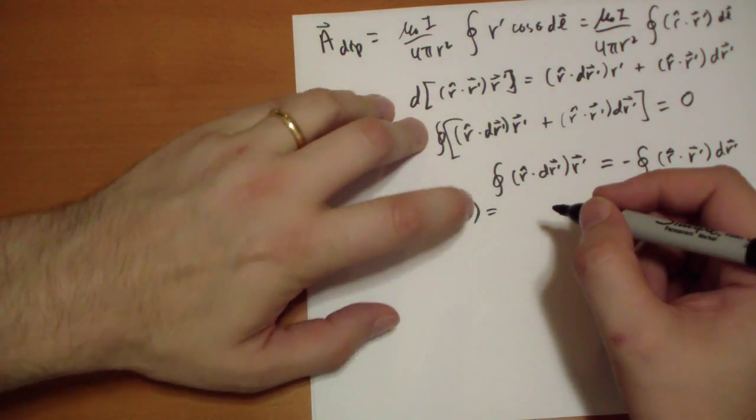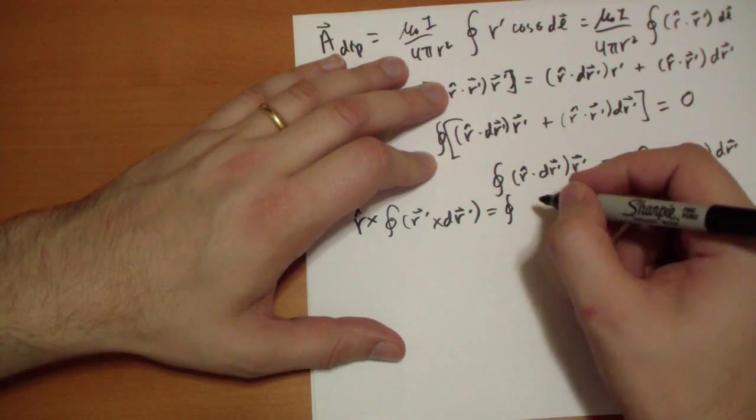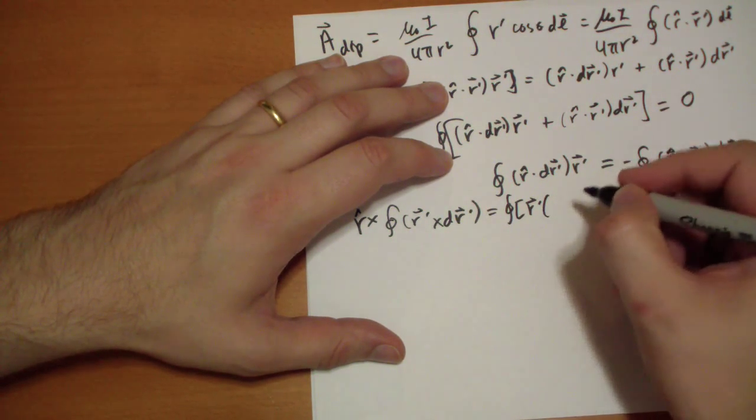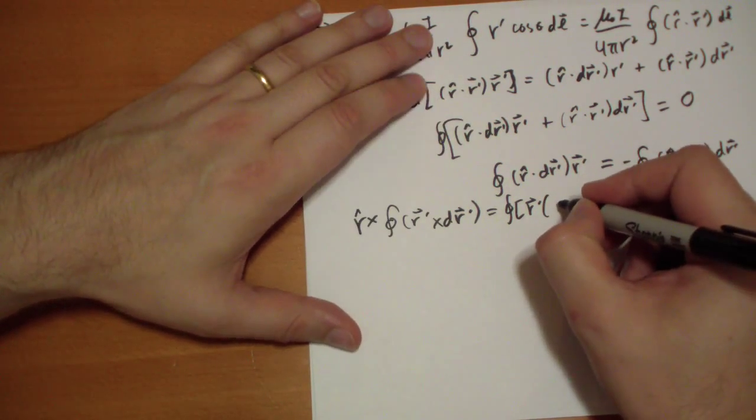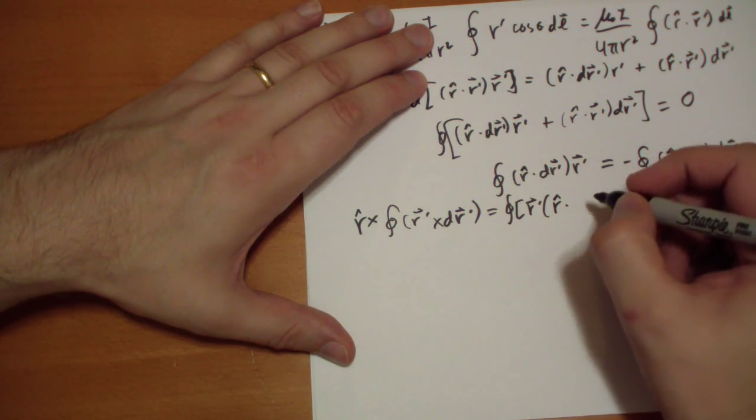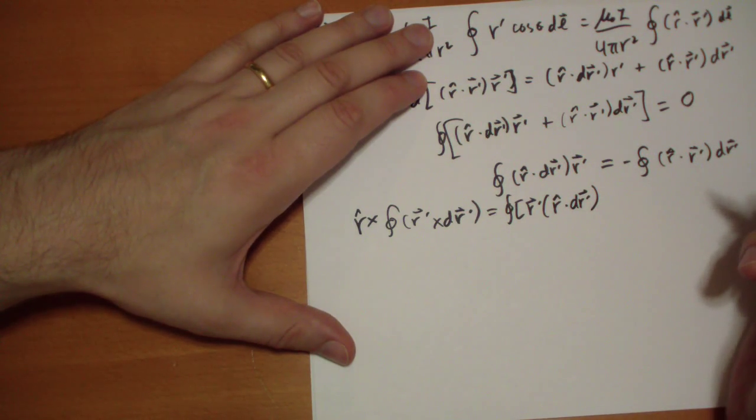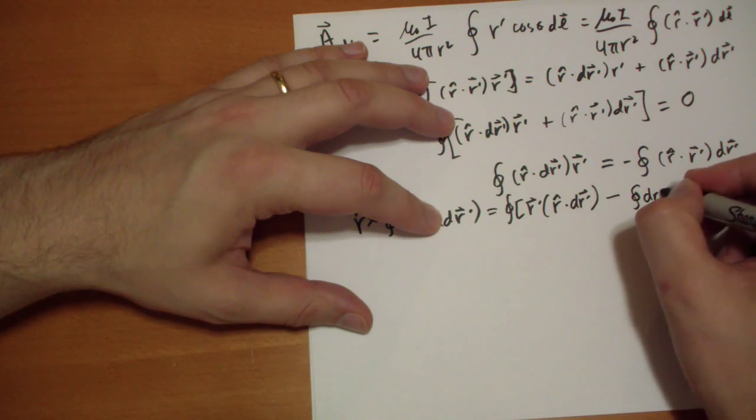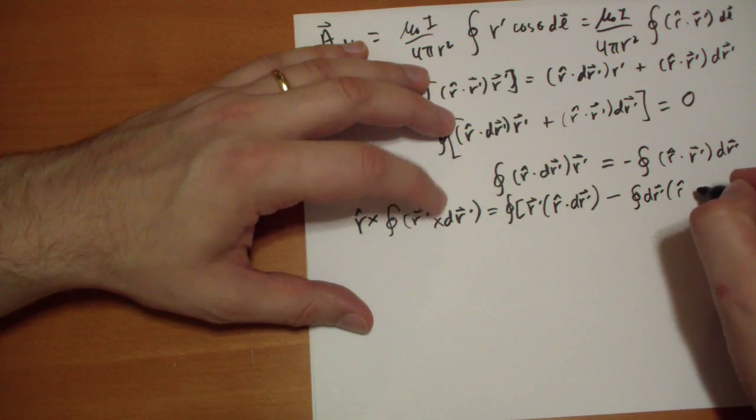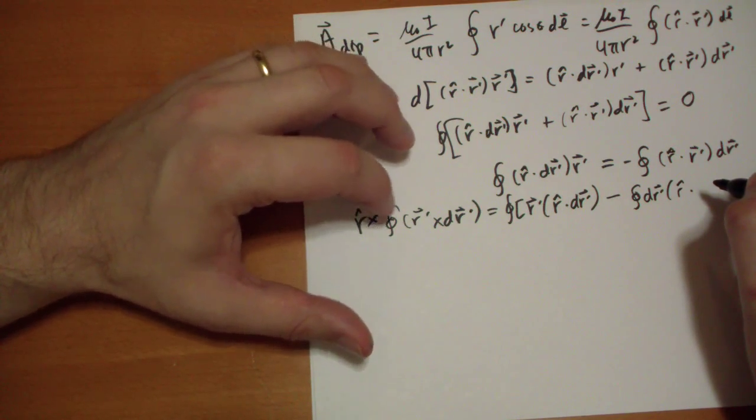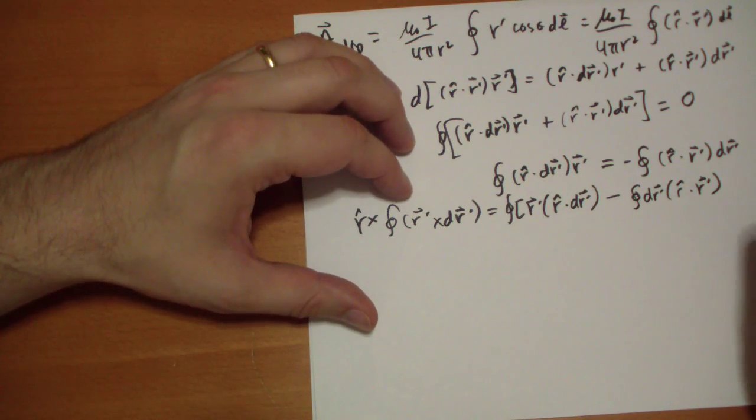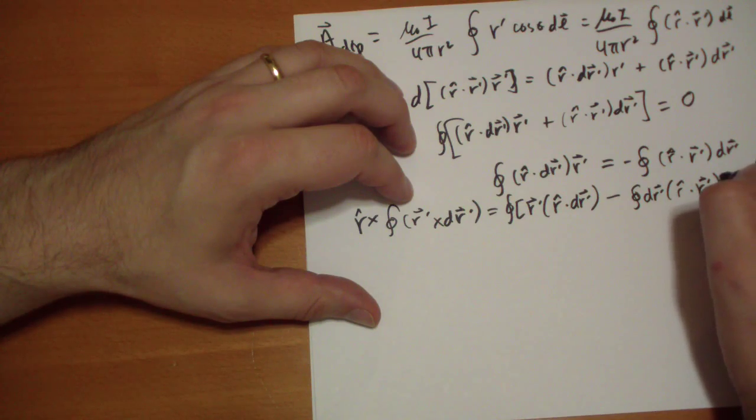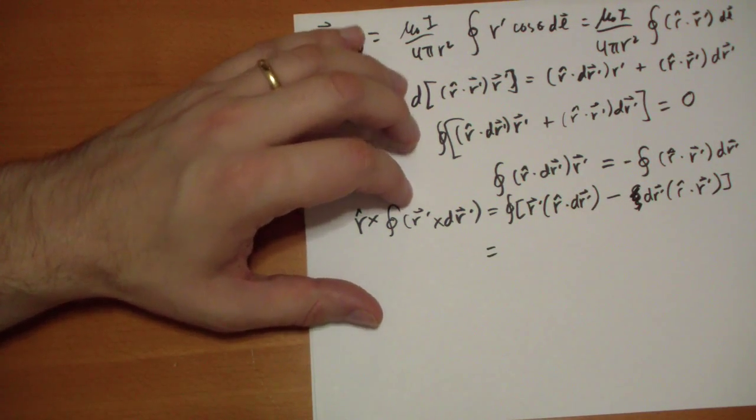So, we take this, use a back cab rule. So, back. So, a cross b cross c is equal to b, that's r prime vector, times back a dot c. So, r hat dot dr prime vector minus cab. So, c dr prime vector times r hat dot r prime vector. Okay, I don't know that we've actually made any gains here. I'll get rid of this one right here. Okay. What is that equal to?